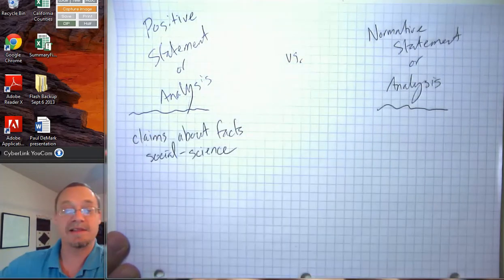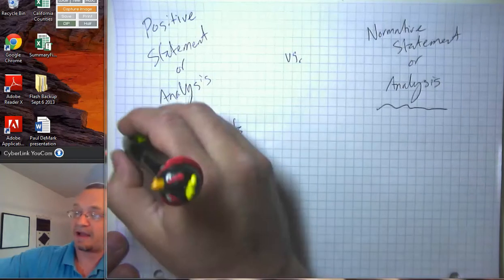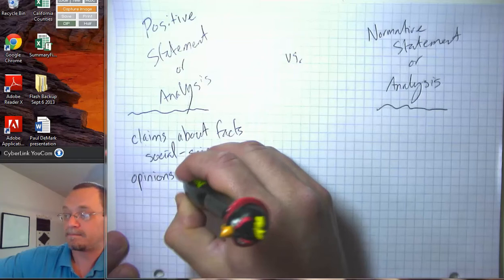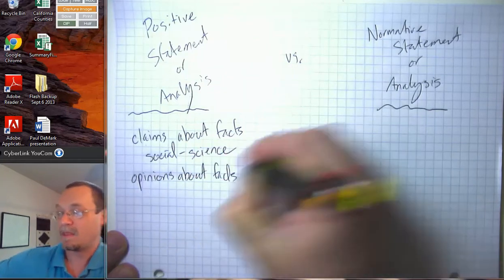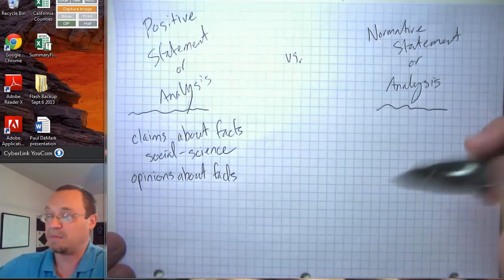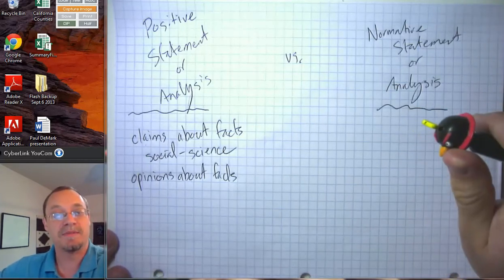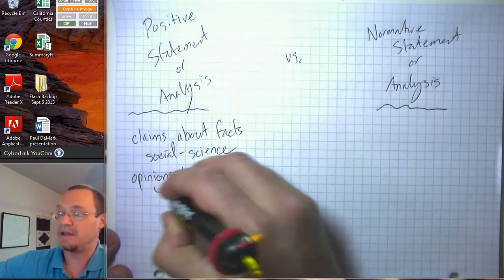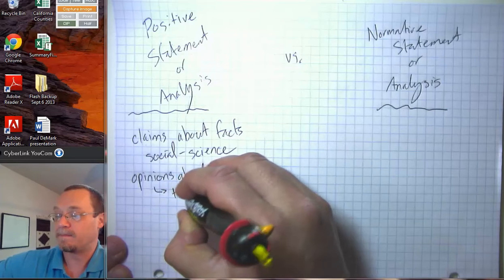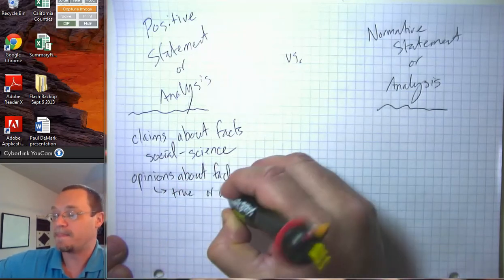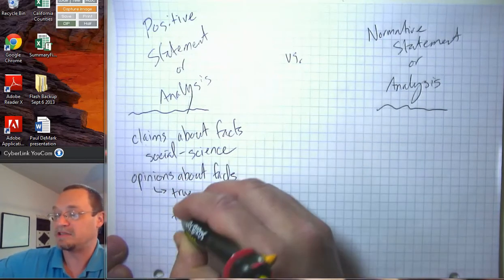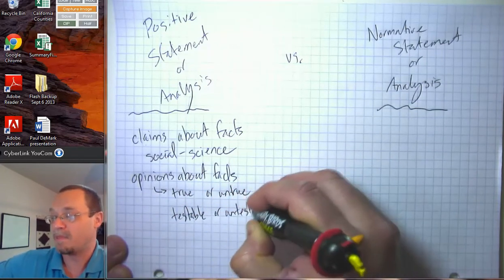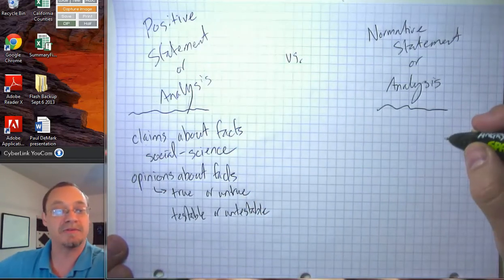When we say claims about facts, they could be opinions about facts. Because often when we bring up this idea of positive statements, people think we mean that they are true facts. But these opinions could be true or untrue, testable or untestable. But at any rate, they are claims about actual facts.